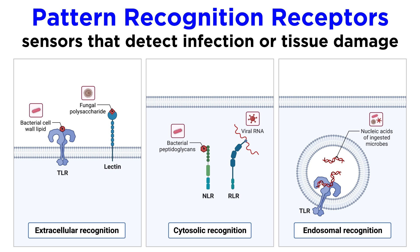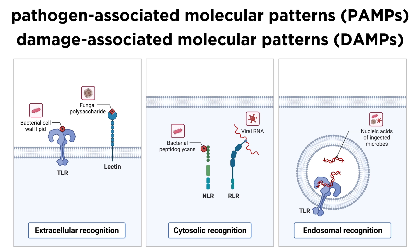We've introduced the general concept of these pathogen and danger sensing molecules before, so in this tutorial we are going to learn precisely what these molecules sense, and how they translate detection into immunological action. As we already know, the signals that pattern recognition receptors sense are called pathogen-associated molecular patterns, or PAMPs, and damage-associated molecular patterns, or DAMPs.